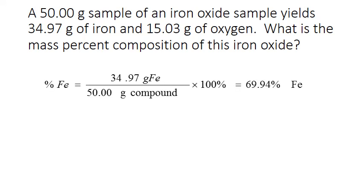For the percent of iron, we get 34.97 grams of iron divided by the total mass of the compound, which was 50 grams of our sample, times 100 percent. That gives us 69.94 percent iron.